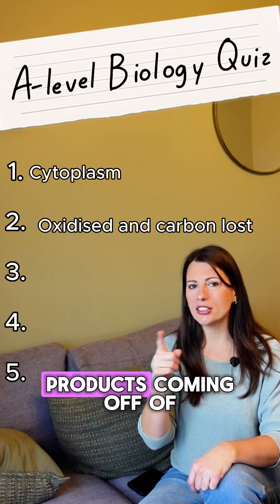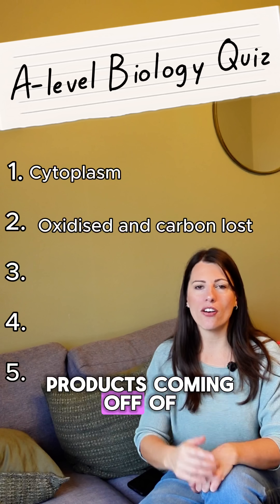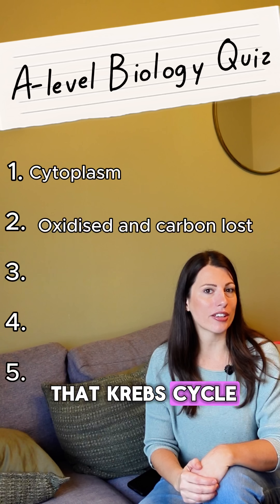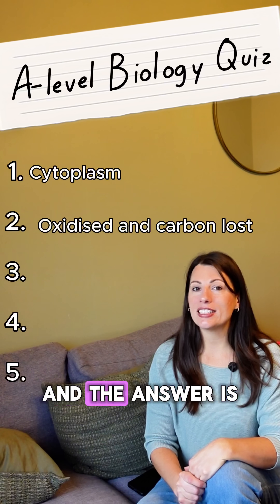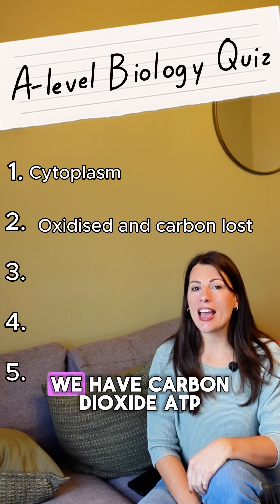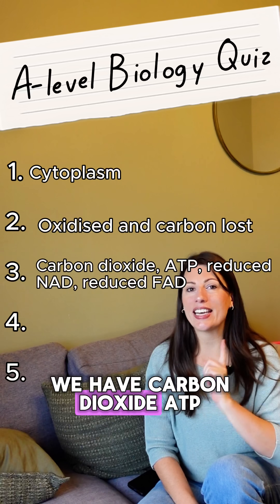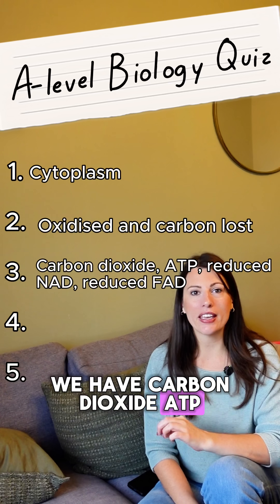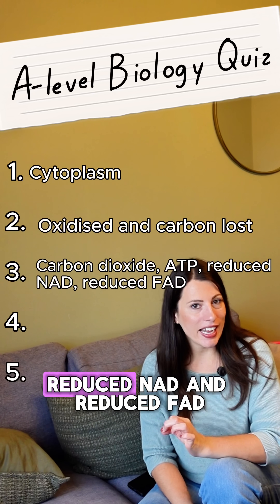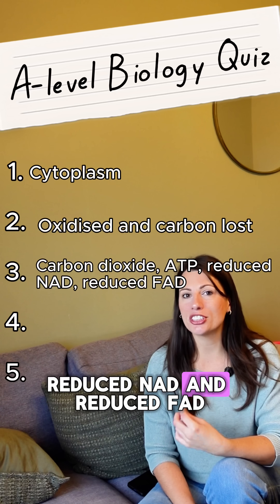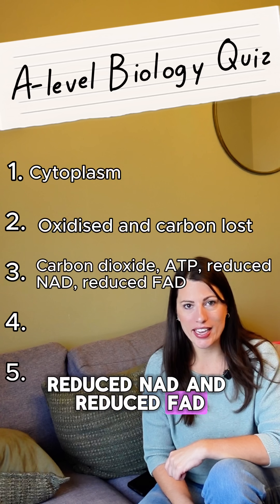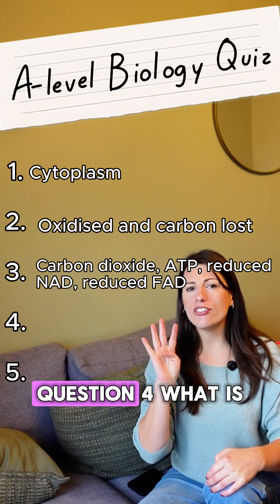Question three: what are all the products of the Krebs cycle? Thinking about that entire cycle, the answer is we have carbon dioxide, ATP, reduced NAD, and reduced FAD.